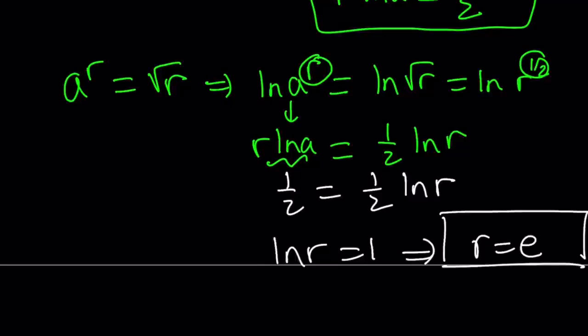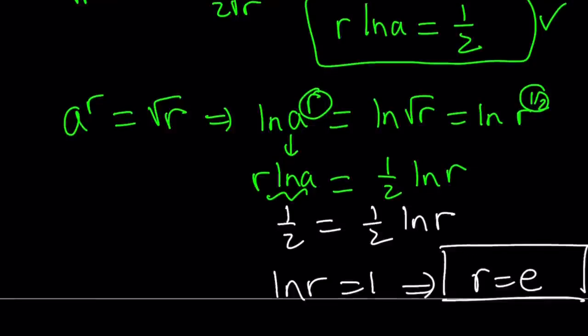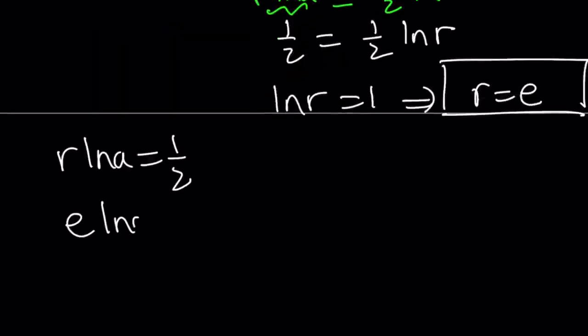So we got the value of r, but r is something that we invented. We're looking for a, not r. But once you find r, you can find a very easily. How? To find a, we're going to use one of these equations. For example, r ln a equals 1 half. r ln a is equal to 1 half. But r is e, Euler's number. So we have e ln a is 1 half. Then from here, ln a becomes 1 over 2e.